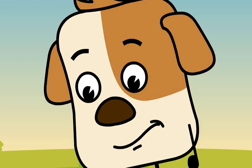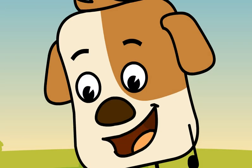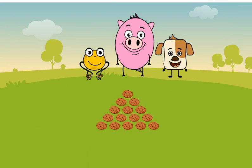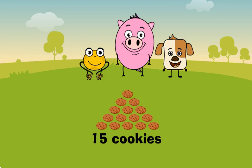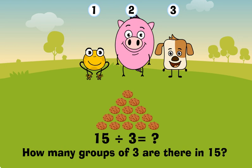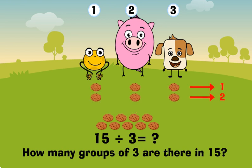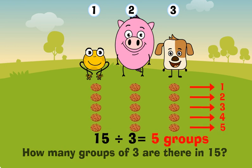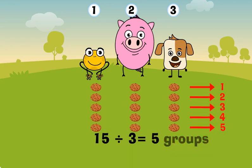Take another example. 15 cookies to be divided among 3 friends, or 15 divided by 3. Or how many groups of 3 are there in 15? So 15 divided by 3 is equal to 5.